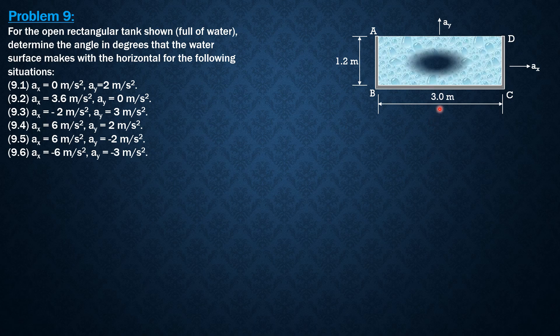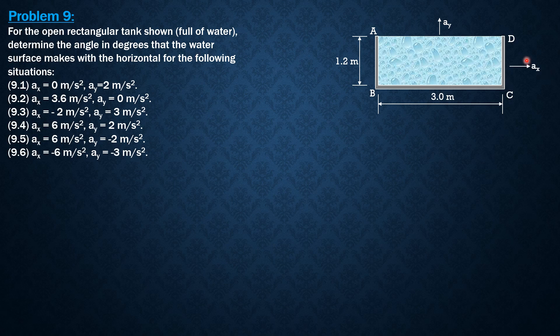So this is the figure. And it has nothing to do with the amount of water that is spilled. So we don't worry about that. We just compute for the slope. So the general formula for the slope tangent theta is equal to ax over g plus minus ay.